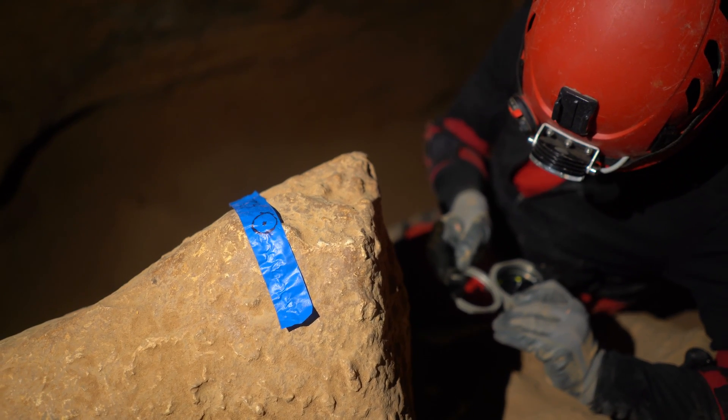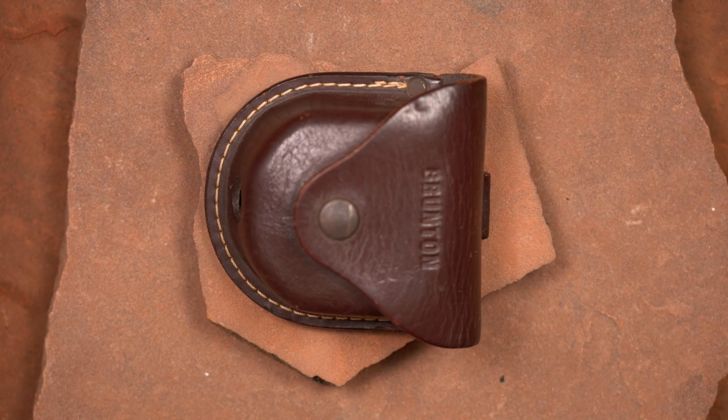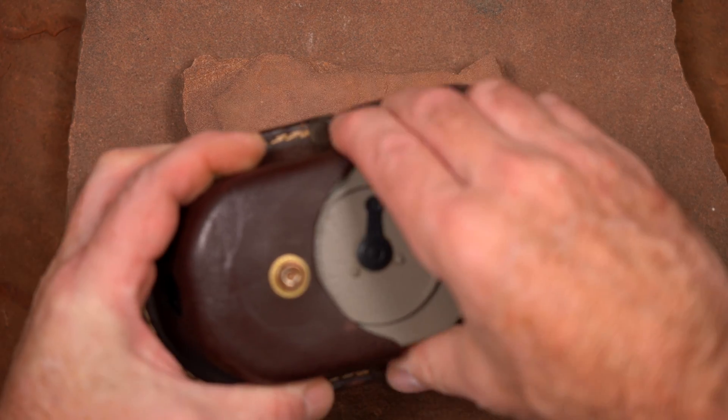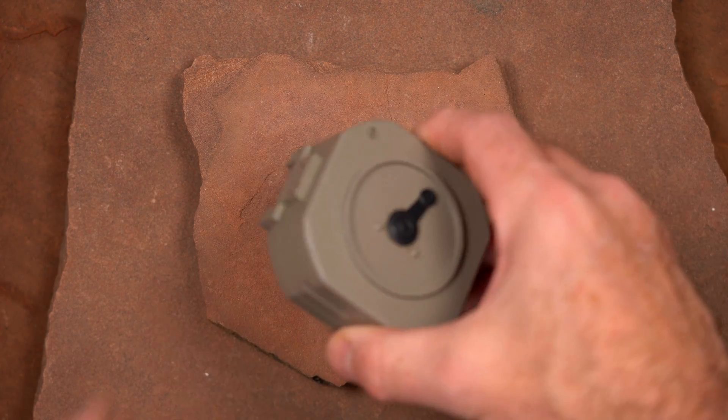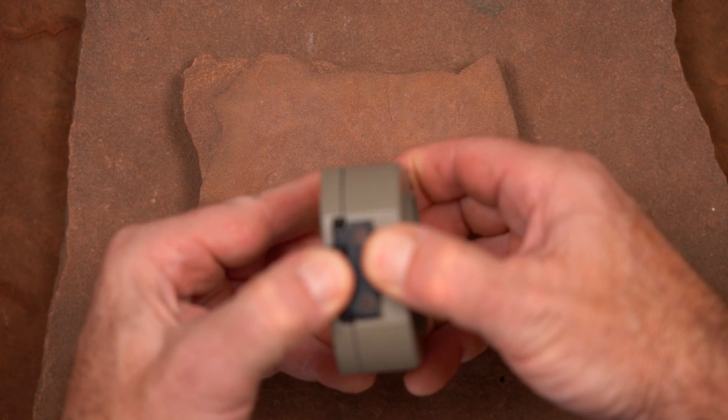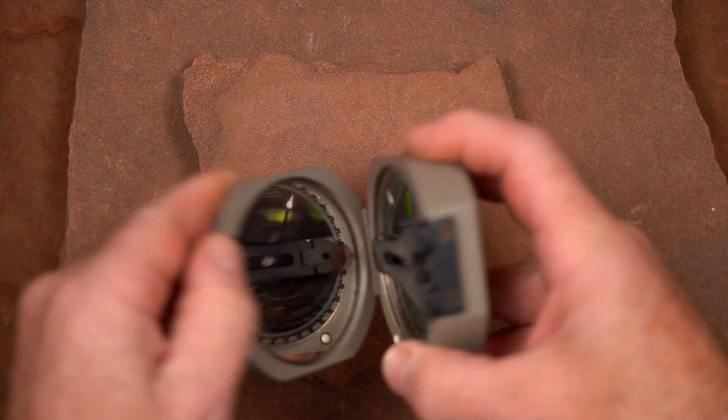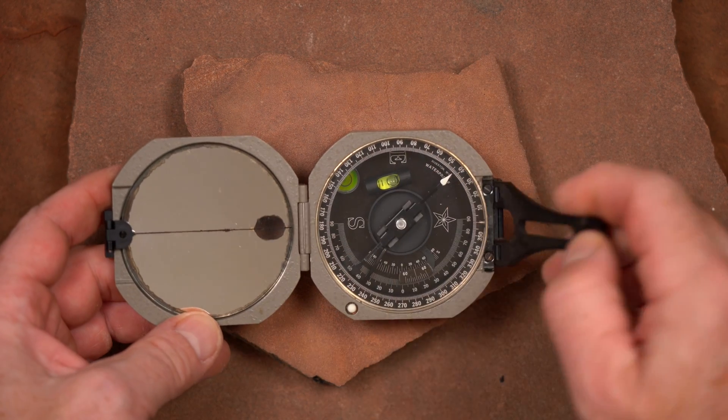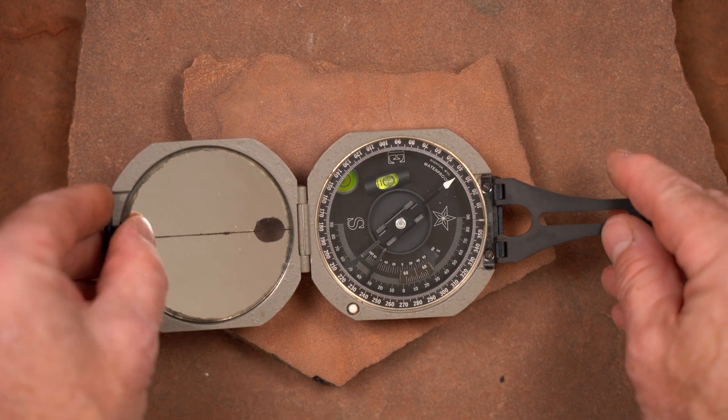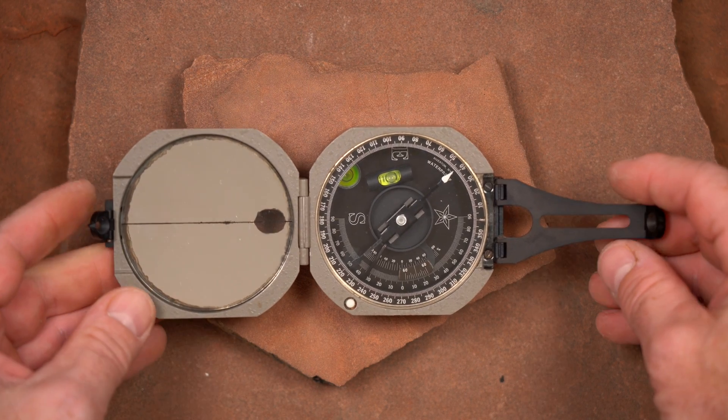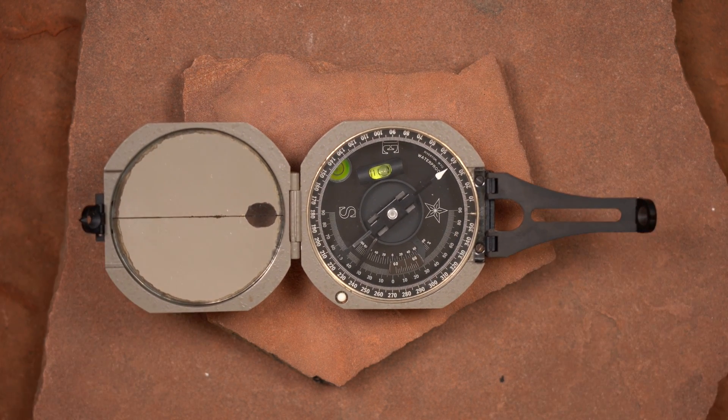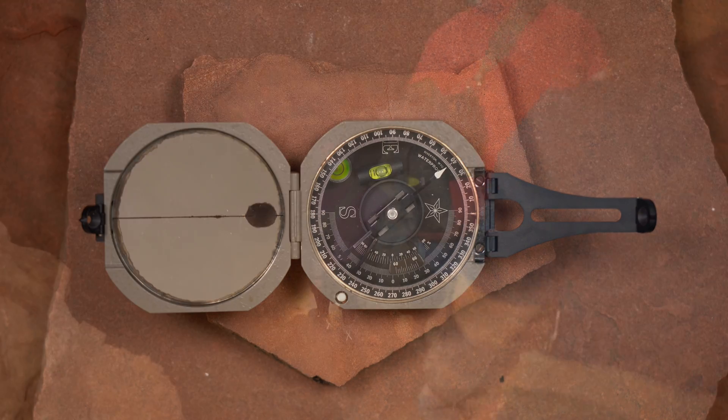The pocket transit is unlikely to make a comeback in cave surveys, but those who are simply interested in other ways to collect accurate survey data might benefit from picking up a used Brunton and experimenting with it. It's a versatile device and an interesting piece of cave exploration history. I want to end by acknowledging West Virginia caver George Dasher and his book On Station. Much of the information for this tutorial was gathered from this excellent resource.